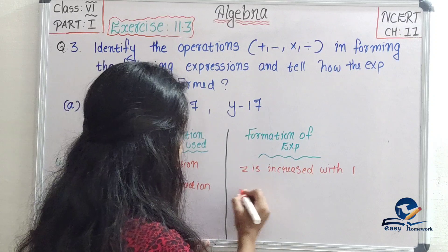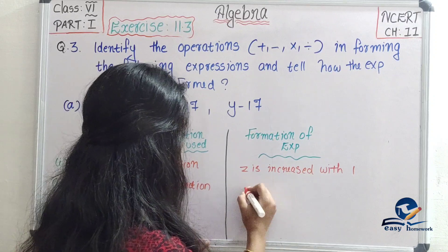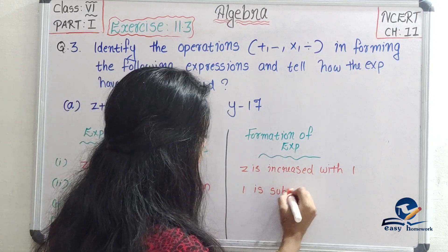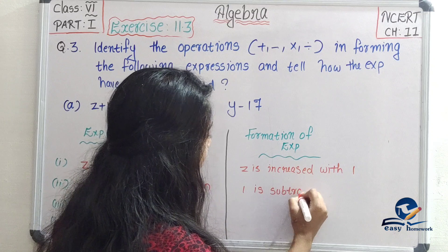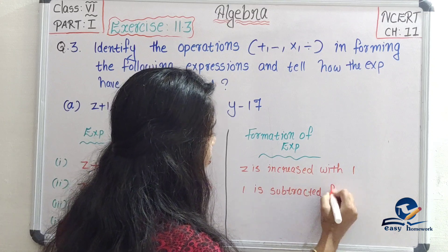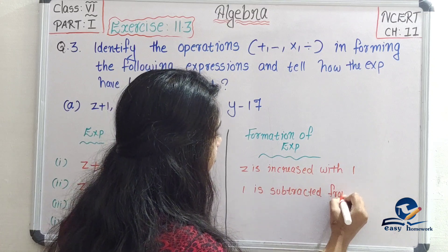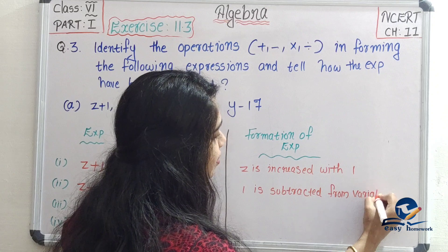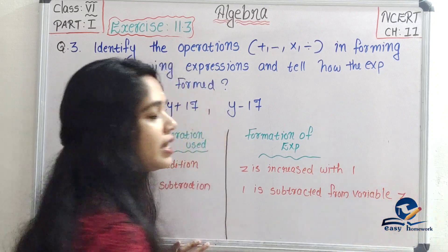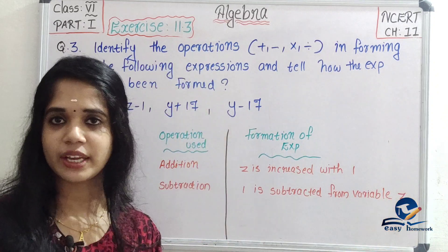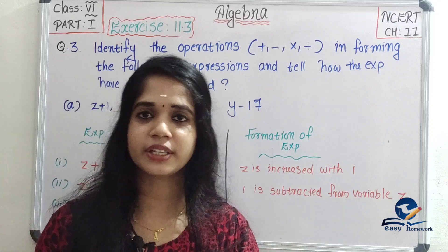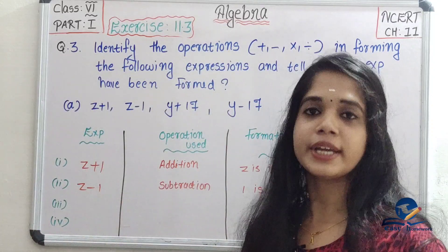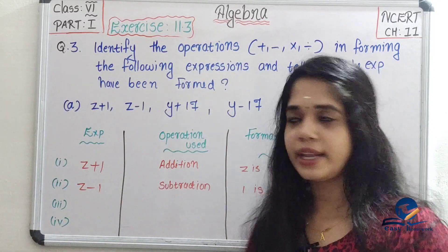Here I am going to show you: one is subtracted from variable z. So z is the variable, and one is subtracted, and we get z minus 1.